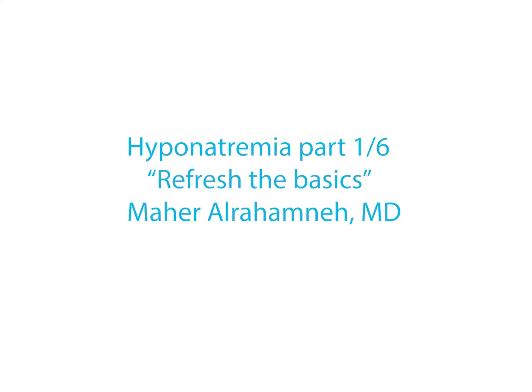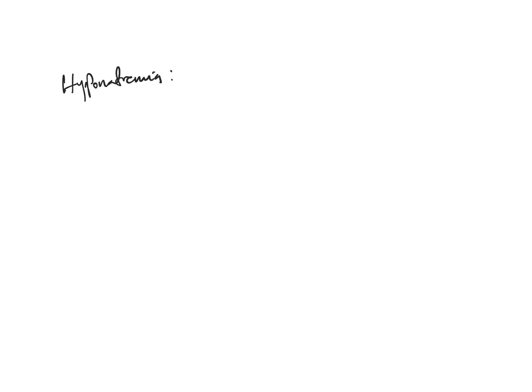Today we're going to start by discussing hyponatremia, and then we'll discuss hypernatremia after. Hyponatremia means low sodium concentration in the extracellular fluid — we'll call it ECF. The normal sodium concentration in the extracellular fluid is 135 to 145, and this is what's reported to us on the BMP or CMP as the sodium concentration.